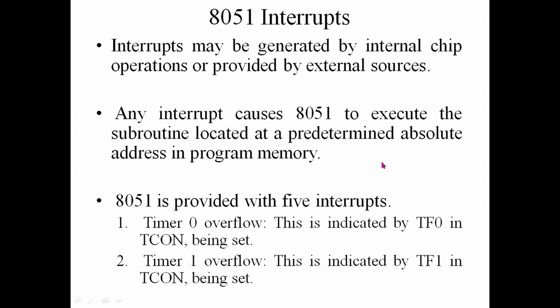When an interrupt occurs, a subroutine program is run. This is called Type 0. In this case, there are 5 interrupts, and this type is called Timer 0.